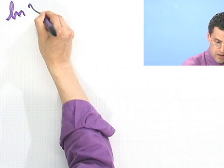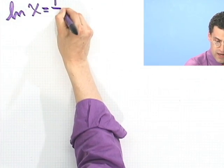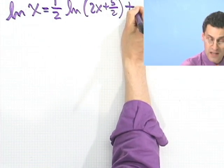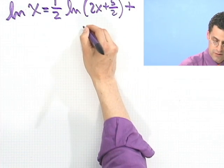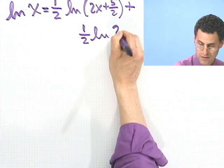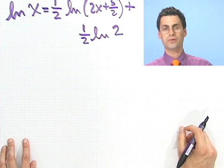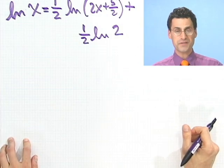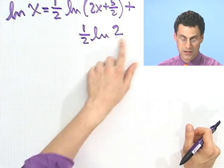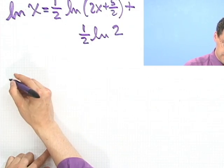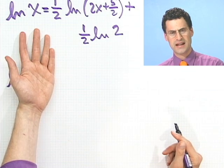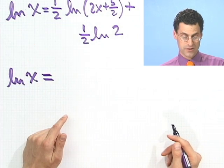Let's try one last one: natural log of x equals one-half natural log of (2x plus 5 halves) plus one-half natural log of 2. This is a big one. Let's think about how to tackle it. The first thing I'll do is try to combine the right side into one logarithm. There's not only one way of tackling this problem — if you tackle it some other way, that's fine too, just make sure you're doing it correctly.